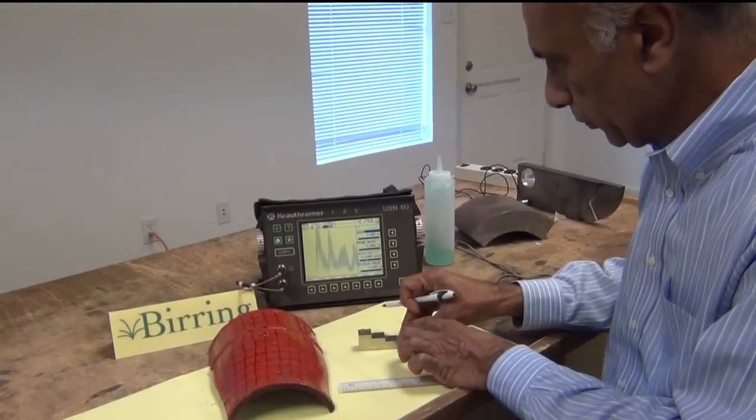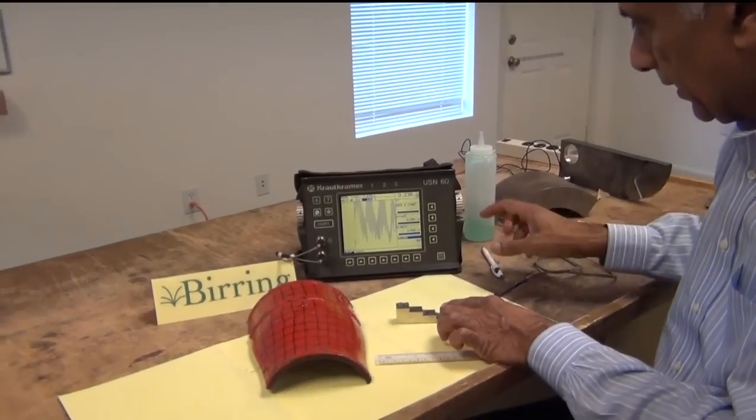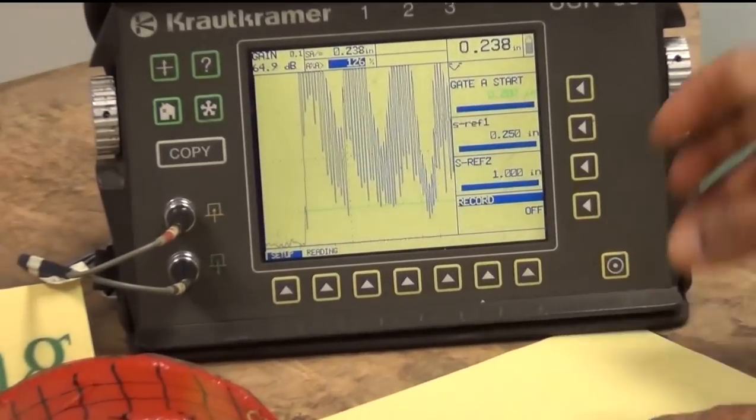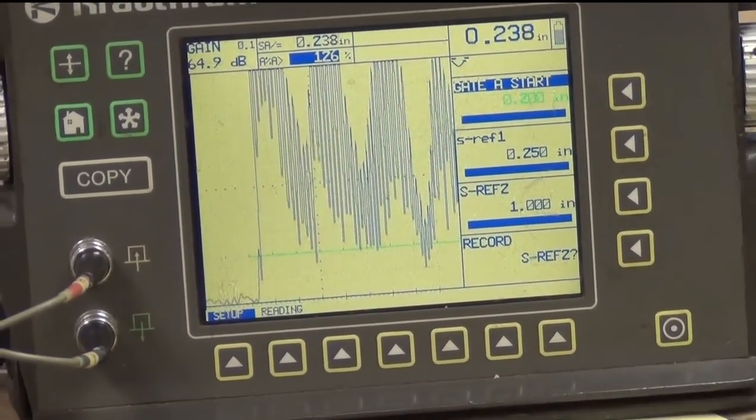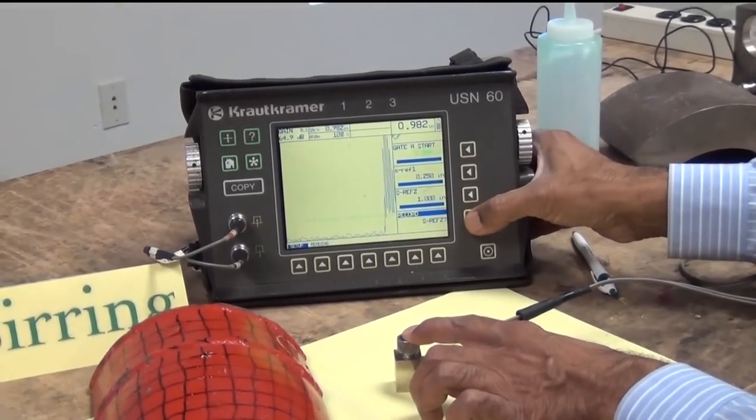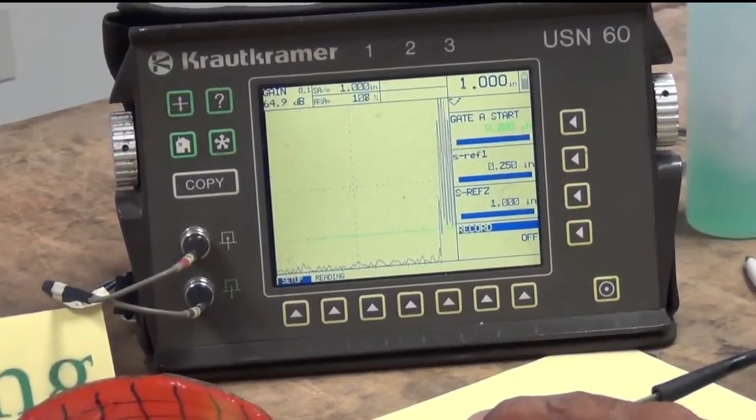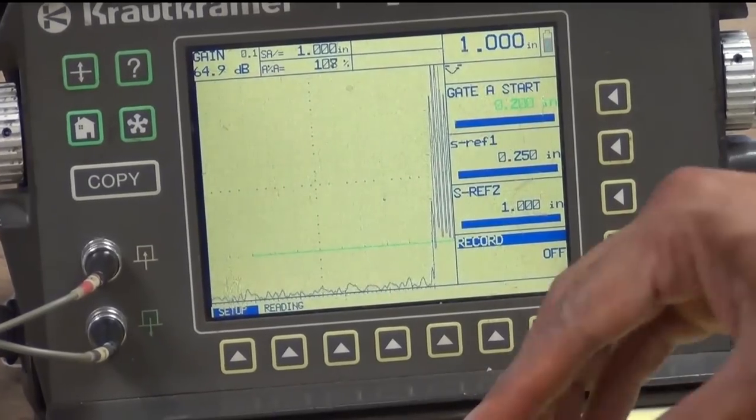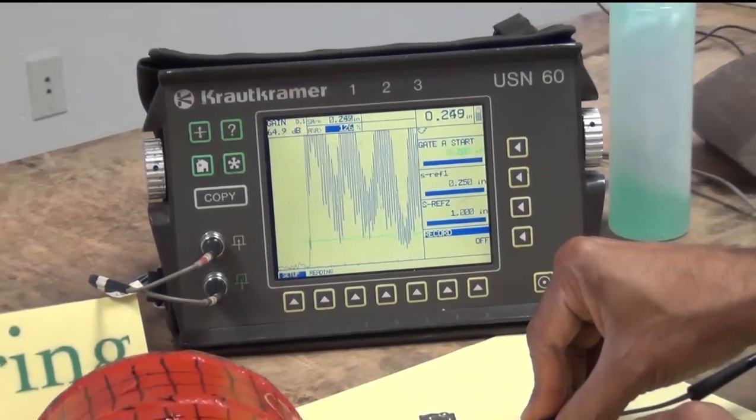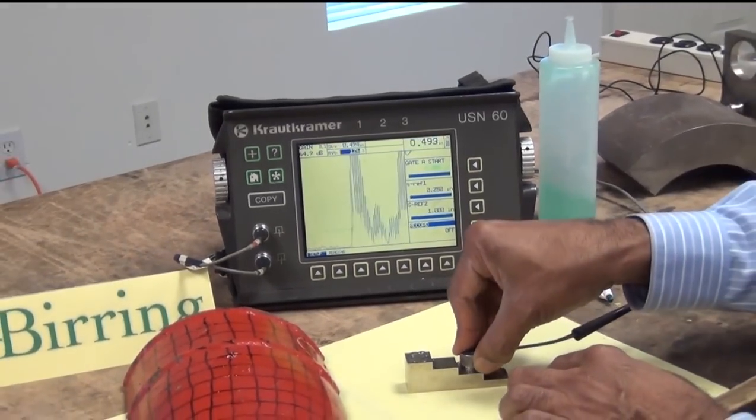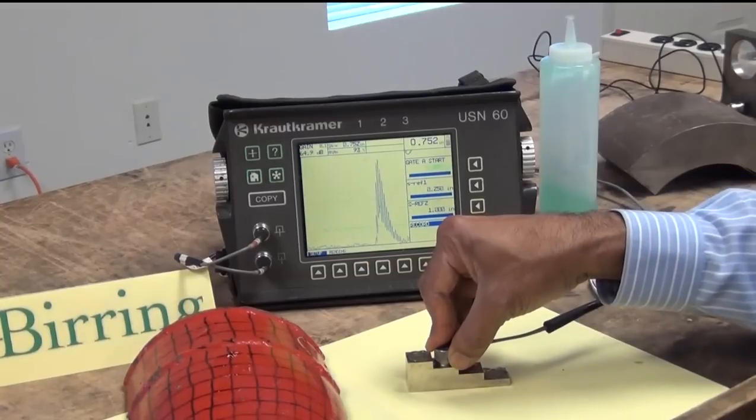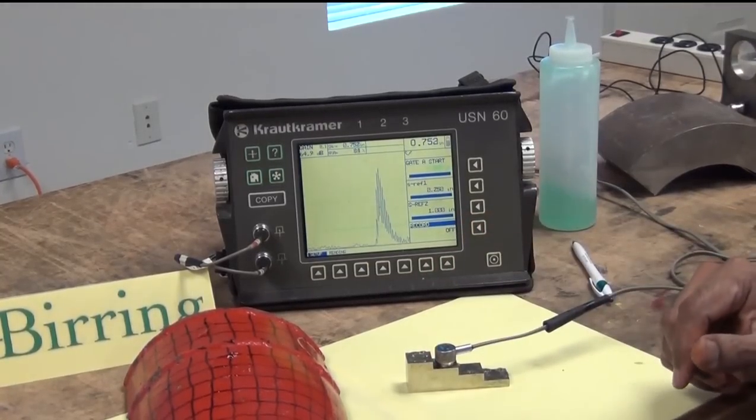Okay here we go. I will go to AutoCal. S reference 1 is 250. We will record S reference 1 now. S reference 2 is 1 inch here. Record it and now we are done. So now 1 inch is 1 inch. 0.25 inches is 0.25 inches or close within 1 mil. This is 0.5. This is 0.750 which is reading 752. So that completes our calibration.